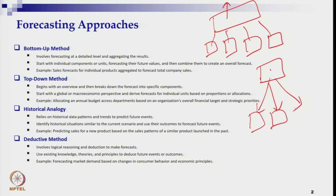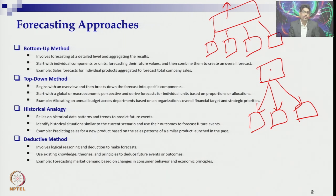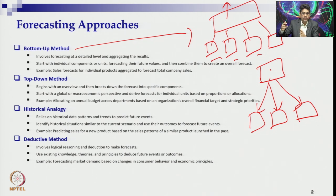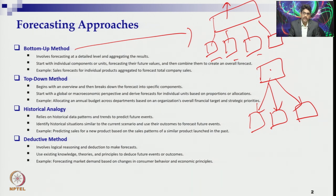The top-down approach is also popular, with its own merits and demerits discussed in the introductory session. In the bottom-up approach, unit managers sometimes inflate estimates by adding buffer, safety stock, or contingency cost and time. When aggregated, these inflated predictions lead to high additional cost and time that may not be necessary due to risk management and delay concerns.